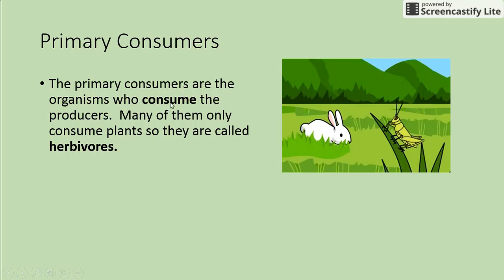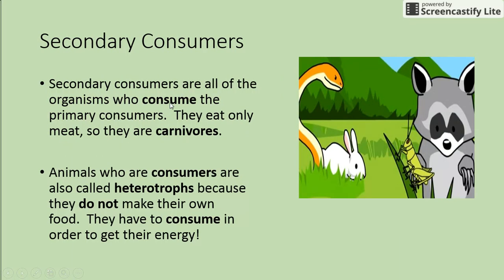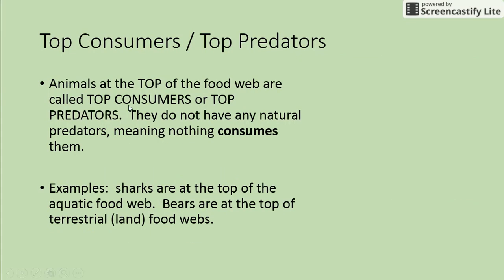Secondary consumers are all the organisms who consume the primary consumers. They eat only meat, so they are carnivores — like our snake who eats the rabbit, or our raccoon who eats the grasshopper. Animals who are consumers are also called heterotrophs because they do not make their own food; they have to consume something in order to get energy.